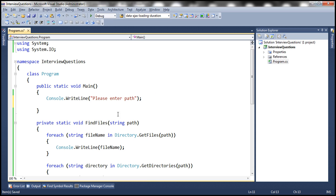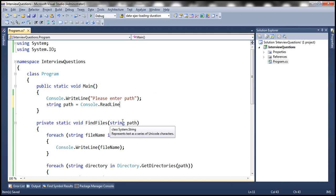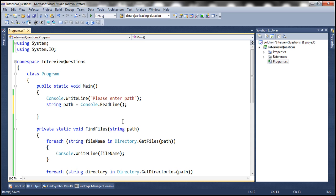So once the user enters a path what we need to do is we need to read it. So let's read it into this variable. And how do we read it? Using Console.ReadLine method. And then we are going to invoke this method and pass the path. So FindFiles and let's pass the path parameter.